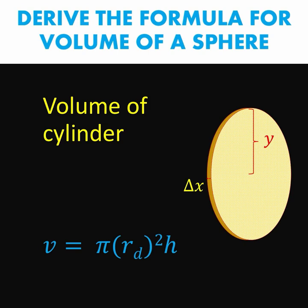In our case, our base is a circle. So the area of the circle is pi radius squared where our r is the radius of the disk denoted by r subscript d.